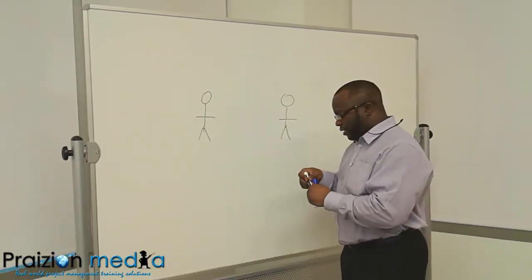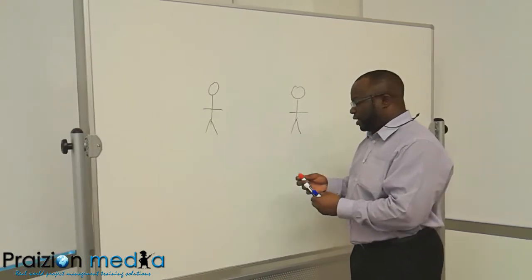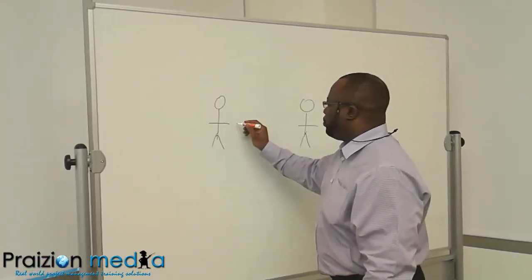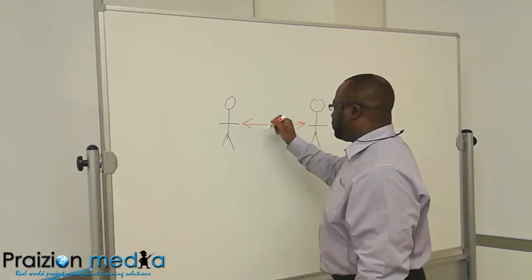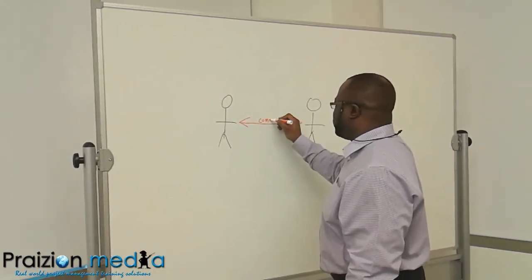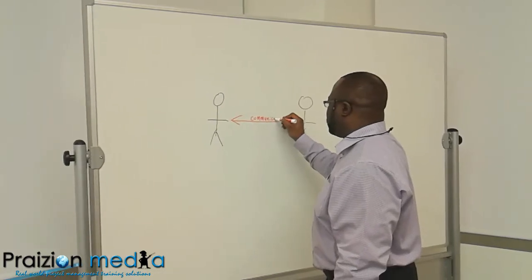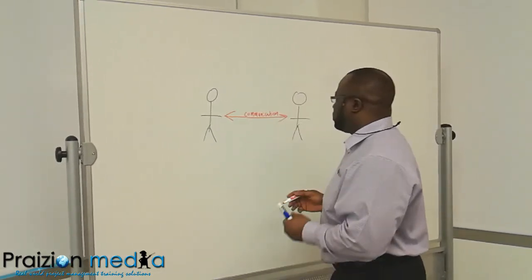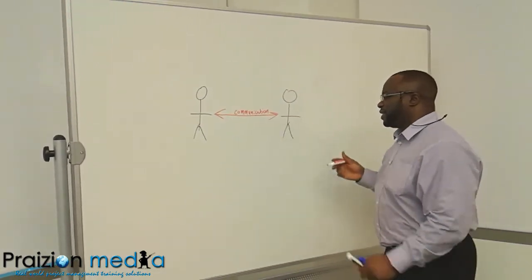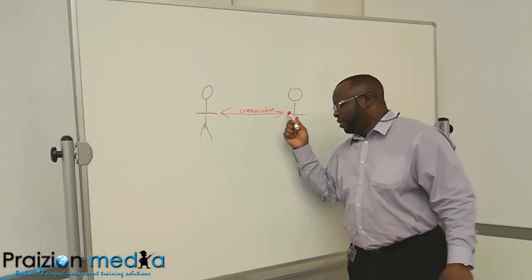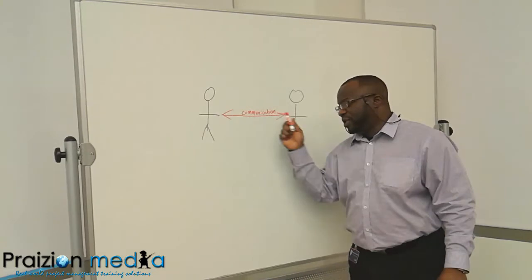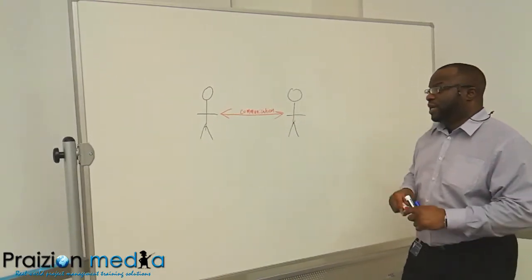In this aspect of N times N minus 1 divided by 2, we have to look at the channels involved. So if there are two people communicating, they could go that way or that way in terms of the communication. This is called a channel. The open channel could go that way. You could communicate from here to there, or from there to there. That is one channel.